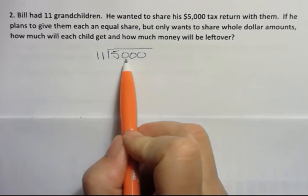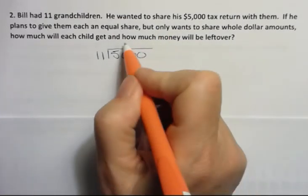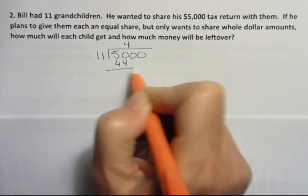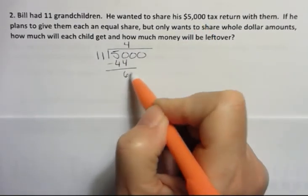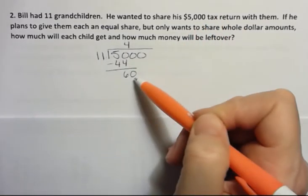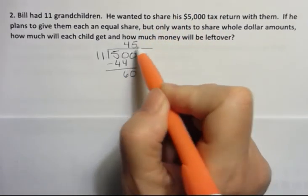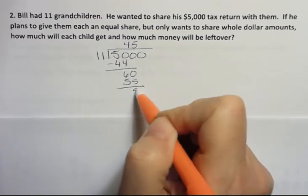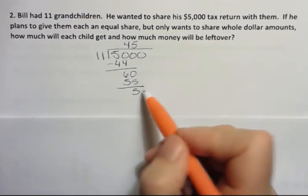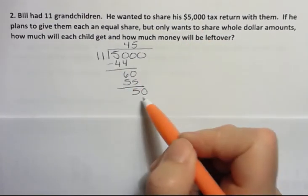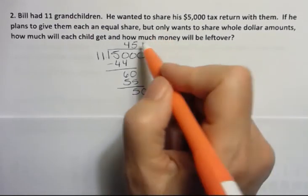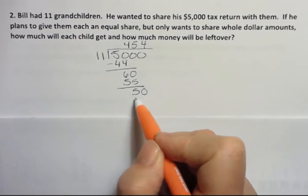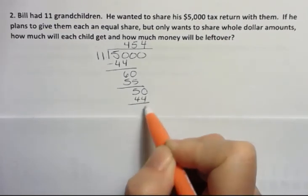How many times does 11 go into 50? It goes 4 times because 4 times 11 is 44. Then I'm going to subtract and get 60. How many times does 11 go into 60? That goes 5 times because 5 times 11 is 55. And then I'm back to 50. 11 goes into 50, as we said before, 4 times. 4 times 11 is 44.